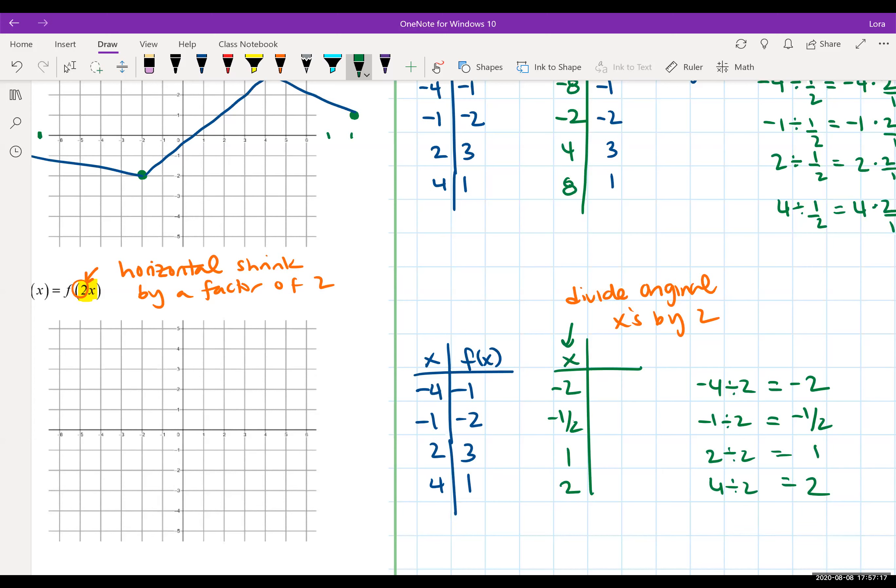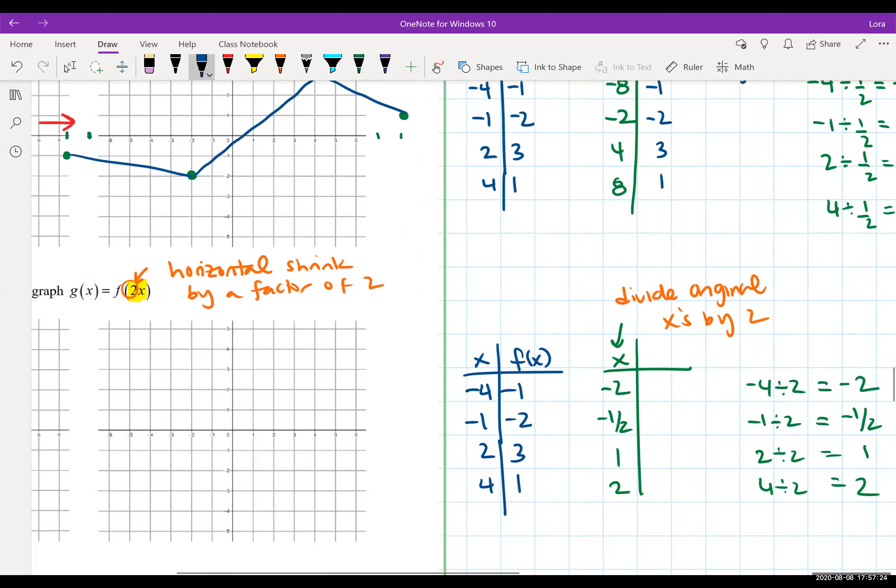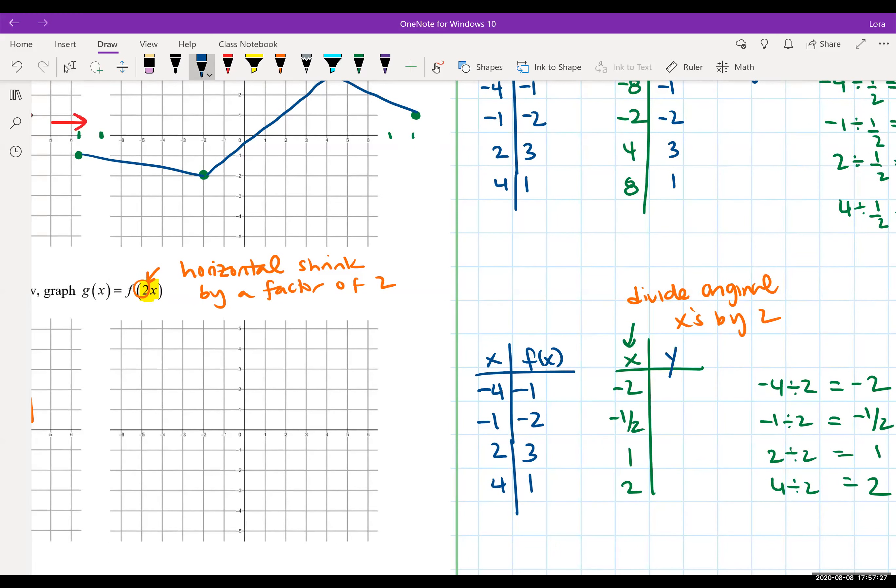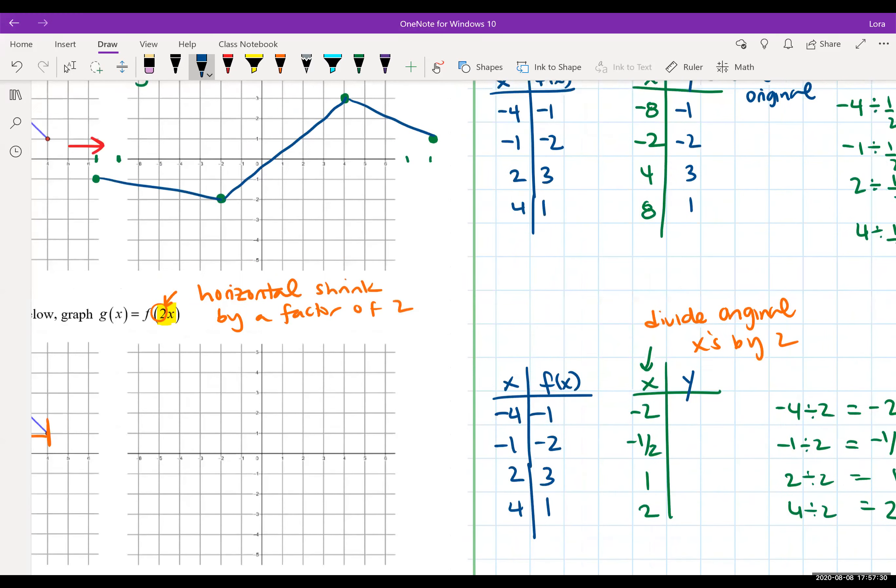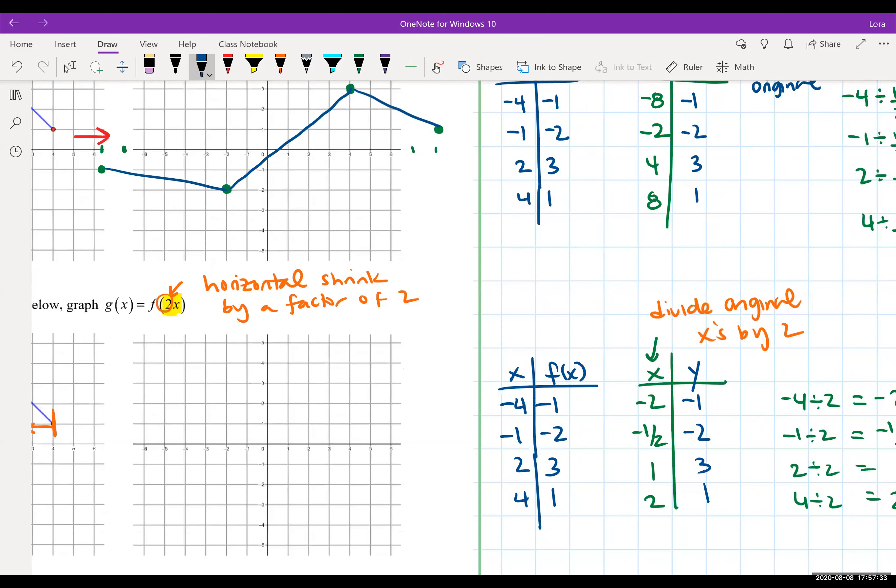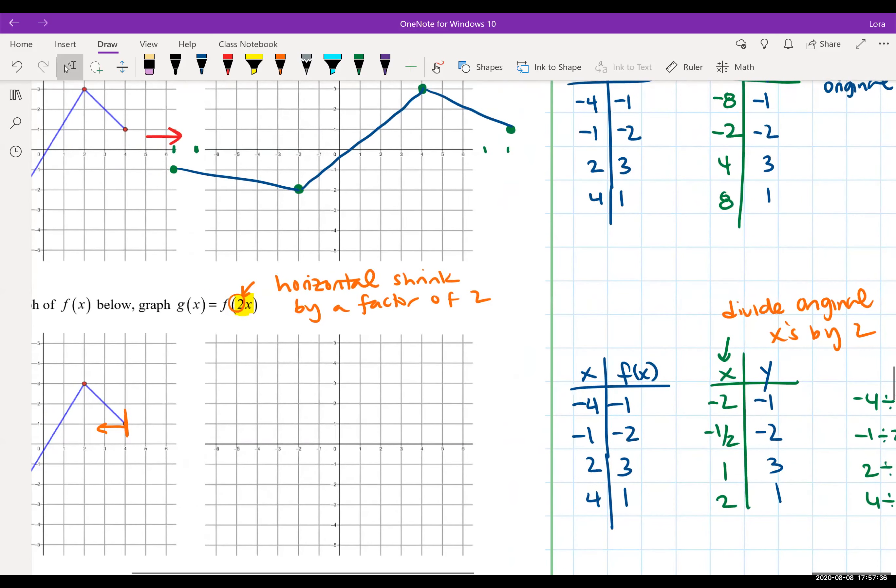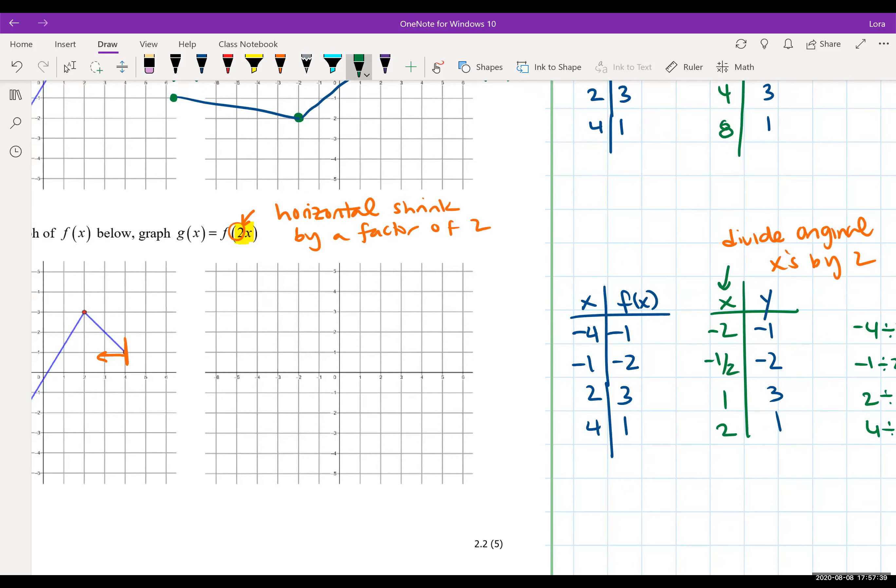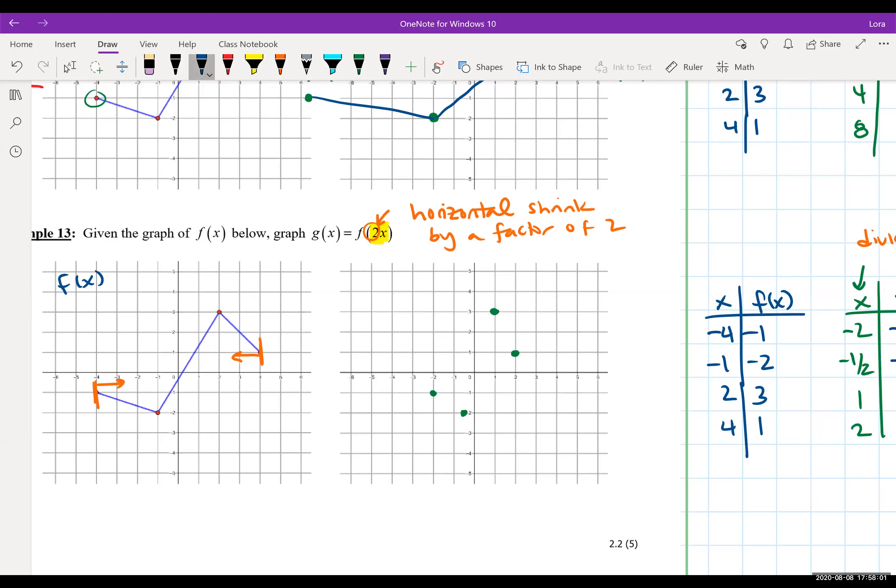So if I want to find that column, I take negative four divided by two. This gives me negative two. Negative one divided by two gives me a negative one half. Two divided by two gives me one. And four divided by two gives me two. So sometimes you get nice numbers. Sometimes you have to deal with the fractions. And we're going to keep the same Y values. We have not done anything special with the Y values. They were originally negative one, negative two, three, and one. So we're keeping that and we'll plot this with our new graph. So negative two, negative one. We are here. Now negative one half, negative two. One, three. And two, one.